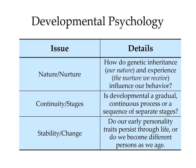Key issues in developmental psychology include the nature versus nurture debate, whether development happens continuously or is stage-based, and whether aspects of us are stable throughout life or whether we change as we get older. The nature-nurture debate concerns genetics versus environment. Continuity versus stage is like the difference between walking up a hill versus walking upstairs. And stability versus change asks whether our personality remains the same throughout our lifetime.